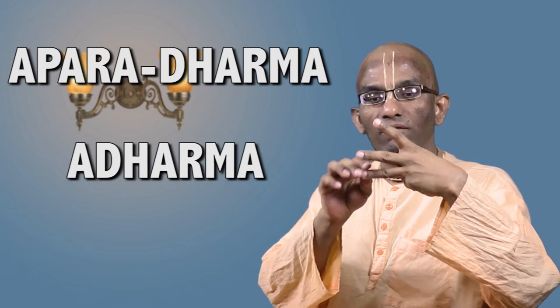So Krishna is not actually telling Arjuna to give up dharma and become adharmic. There are three levels of dharma. There is ordinary dharma, which we could call as aparadharma. There is adharma, which is irreligiosity.